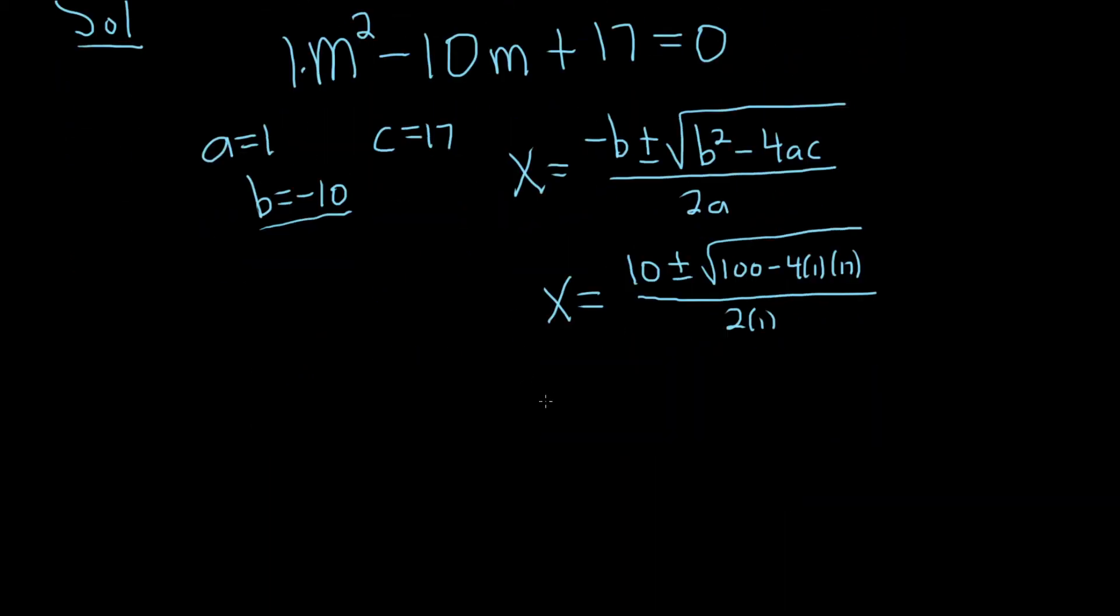So x is equal to 10 plus or minus the square root of, let's see, 4 times 17 is going to be 68. This is 100 minus 68 over 2. So this is 10 plus or minus the square root of 32, over 2.